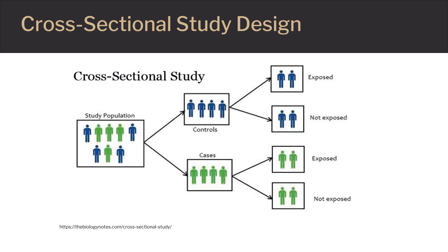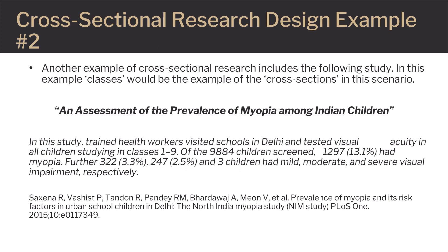This slide illustrates the basic structure of a cross-sectional study design. Controls and cases are each randomly taken from a study population and then examined or observed for exposure to a specific disease risk factor. The study population is selected based on heterogeneity of individuals which vary in age, ethnic and other demographic characteristics. Another example shows various classes or grades serving as the sections across which variables are explored.